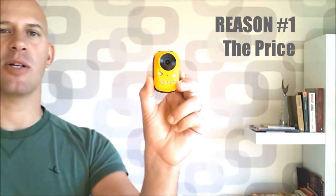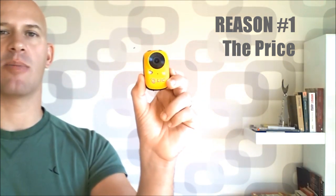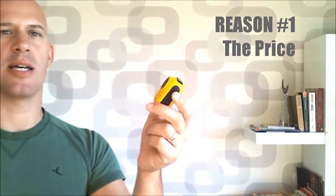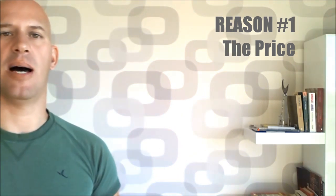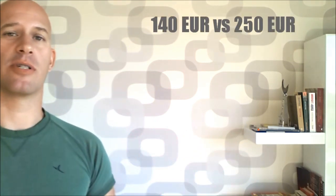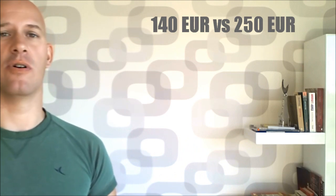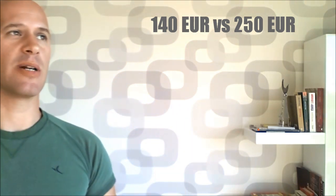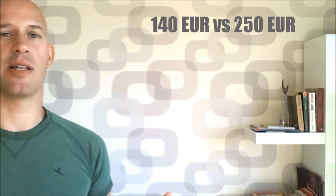Reason number one, the price. The Liquid Image Ego camera is priced on eBay from 140 to 150 euros. You'll find it mostly in UK so it's going to be in pounds but the equivalent in Euro is under 140 and this is what I paid for this. The GoPro White is priced about 246 to 250 euros so you see there is a difference of about 100 euros on a little piece of hardware like this. So I would say it's better to go for something cheaper if the quality is the same.